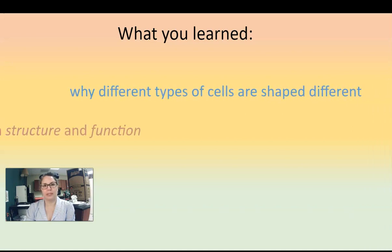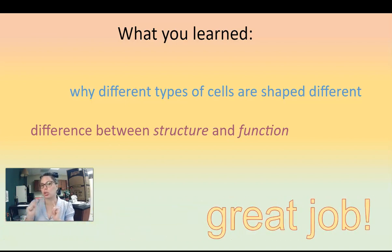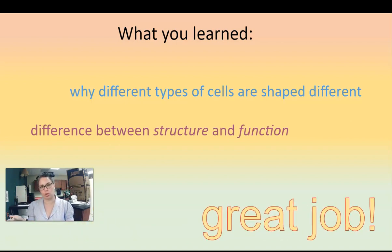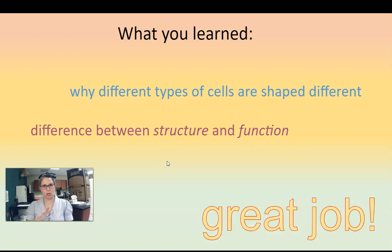So, we learned why different types of cells are shaped the way they are — their structure is based on their function, what do they do. Differences between structure and function: structures are parts of our body, the things that make us up, and functions are the jobs of those parts — function is the job of the structure. Keep these notes with your other notes because you're going to use them for your assignment.